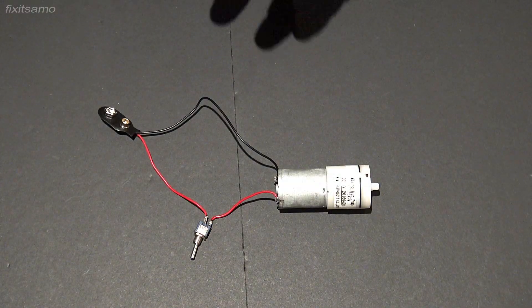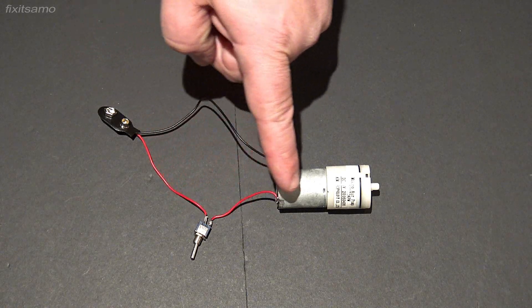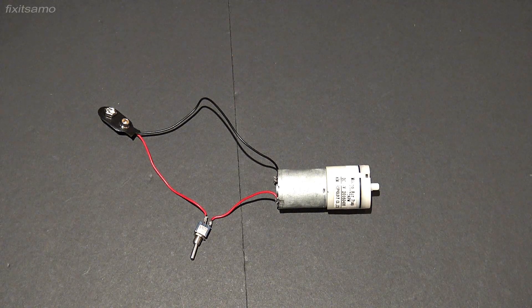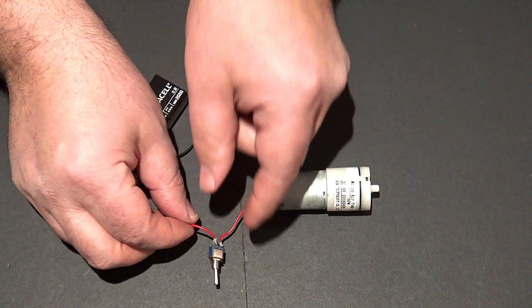So this is how our connection is supposed to be. We got the 9 volt connection, the red wire goes to the on-off switch, from the on-off switch to the motor, and the black wire goes directly to the motor. And now we're gonna plug our battery and make sure that our on-off switch is working fine.